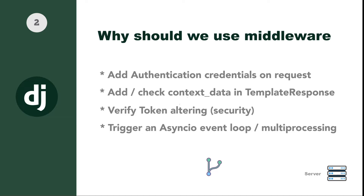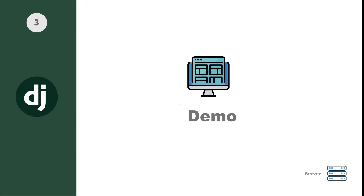We can also use middleware to add or check context data in templates. When you are using a third-party application, the application you install in Django will usually inject some context data in templates via the middleware. We can also use middleware to verify token altering — in a security context, checking that from request to response there is no token altering on that traffic. We can also use middleware to trigger an async IO events loop to alleviate processing on the view.